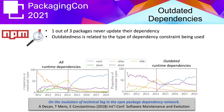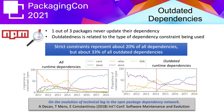We did a small analysis looking at the evolution over time of all runtime dependencies. What we found was that over time there is an increasing use of the caret dependency constraint, which becomes the most prominent. Since its introduction as the default constraint in 2014, it has replaced the tilde constraint. But still, a significant fraction of outdated runtime dependencies are using strict constraints — about one out of three.